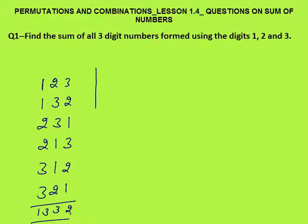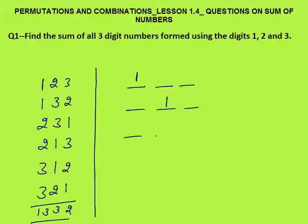What we have to do is understand the logic. We will find the contribution of each digit. Numbers start with 1 — 1 can be at the hundreds place, the tens place, and the units place.